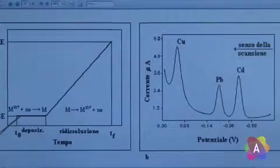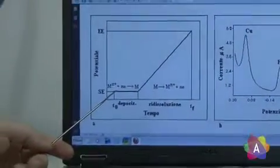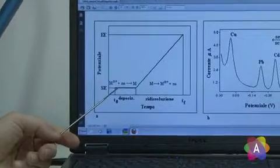For example, a reducing potential in order to reduce a metallic ion to metal and to form an amalgam into the mercury drop. After this step, a scanning is performed.